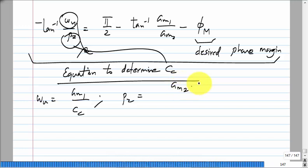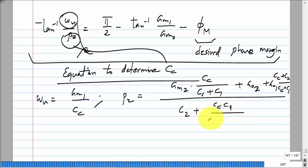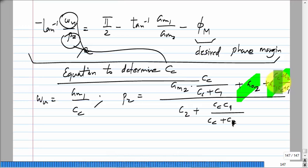ωu is Gm1/Cc — that is simple enough. P2 is Gm2·Cc / (Cc + C1) in the capacitor network — there was also a term C2 plus Cc·C1/(Cc + C1) in the denominator. These formulas are kind of painful to work through by hand, so first consider what approximations can be made.